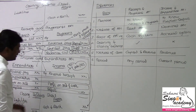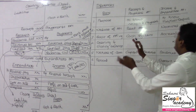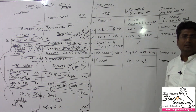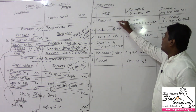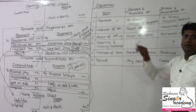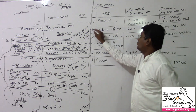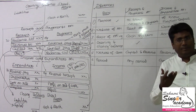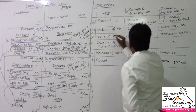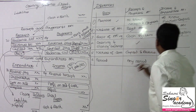Now let me ask the differences between receipts and payment and income and expenditure. The purpose of receipts and payment is to know the cash receipts and cash payments. The purpose of income and expenditure is to know the surplus or deficit. Regarding nature of account: receipts and payment is a real account — it is like a cash account. Income and expenditure is a nominal account — like a profit and loss account.